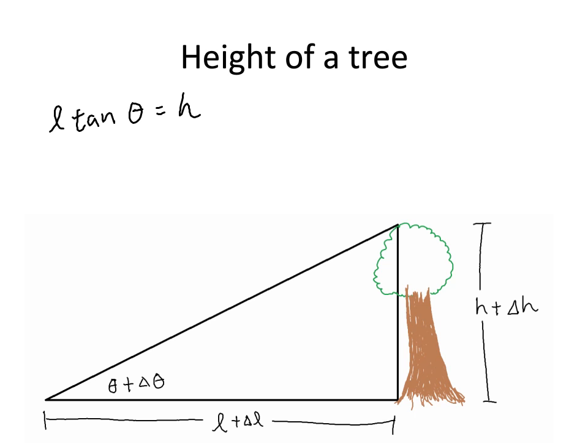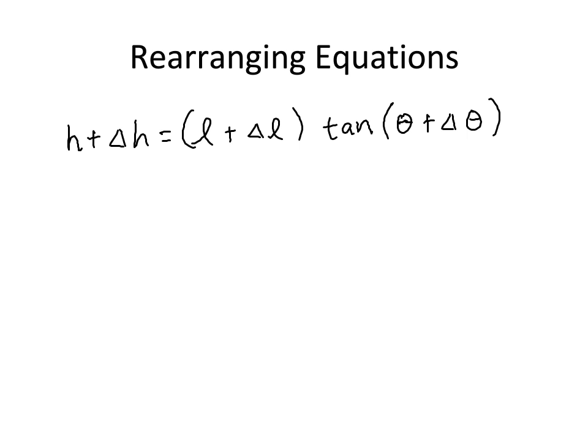Let's see how that changes our equation. First, from our previous slide, we have l tan theta is equal to h. Here, all I have done is first flip the equation, then plug in their respective delta terms. So as you can see, h turned into h plus delta h, l turned into l plus delta l, and theta turned into theta plus delta theta. Now, let us rearrange these equations to see what we can get and solve for delta h.